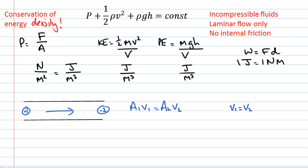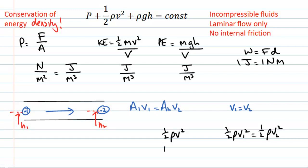To use Bernoulli's equation to understand what's happening with the pressure, we look at each term. Because V1 equals V2, the kinetic energy density at point one equals that at point two — the density of the fluid doesn't change along the pipe since it's incompressible. Because it's a horizontal pipe, the height of the fluid at point one equals that at point two, so the potential energy density rho·g·H1 equals rho·g·H2. Since these two terms are the same, the pressure at point one must also equal the pressure at point two. We have equal pressures inside the pipe.